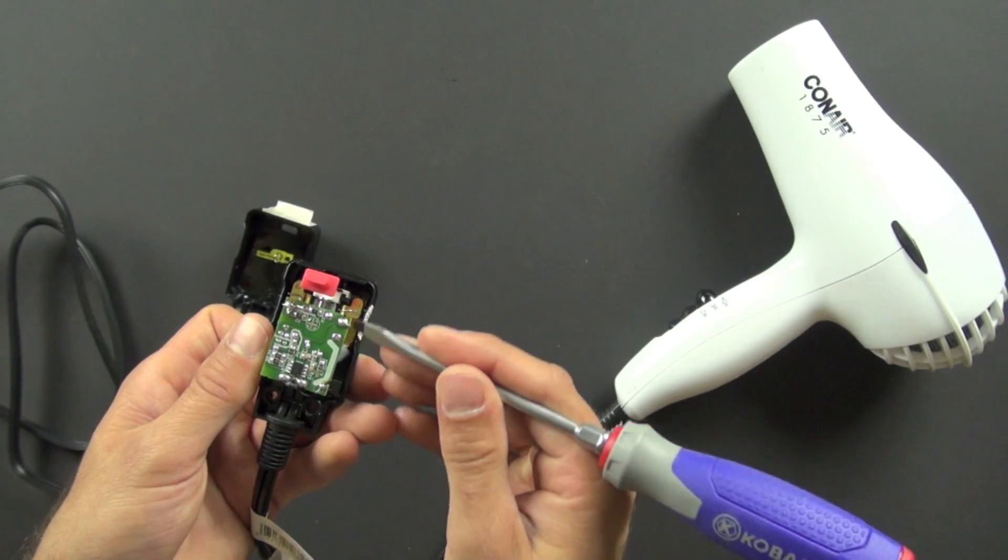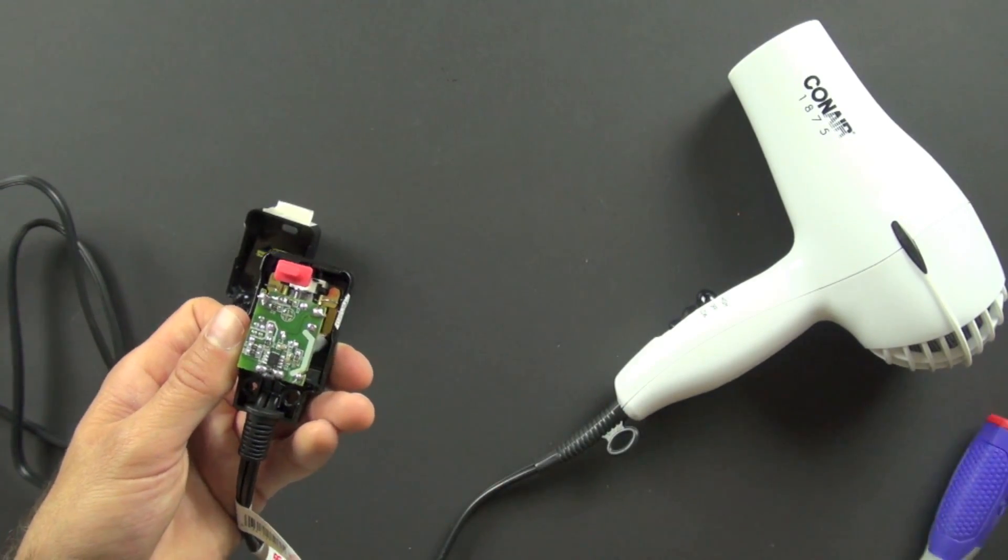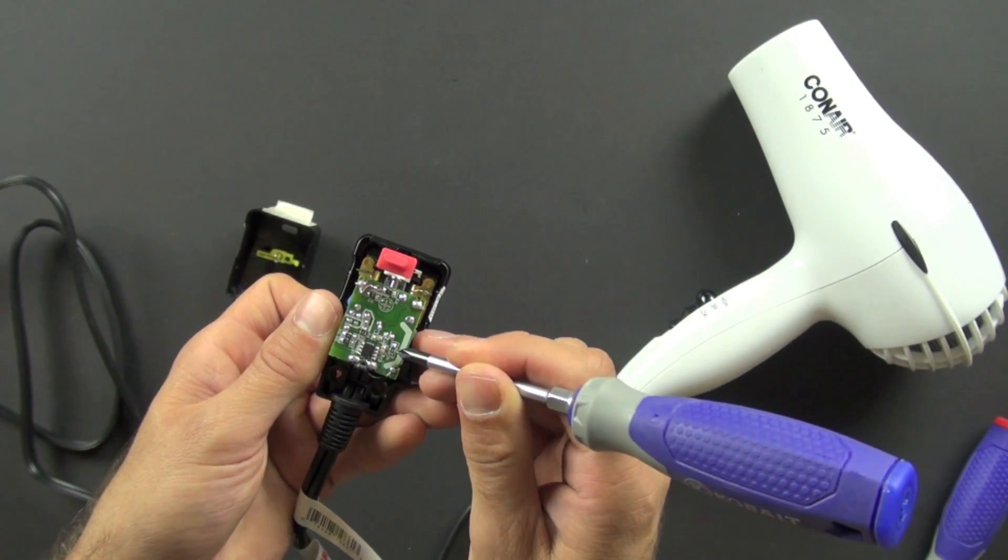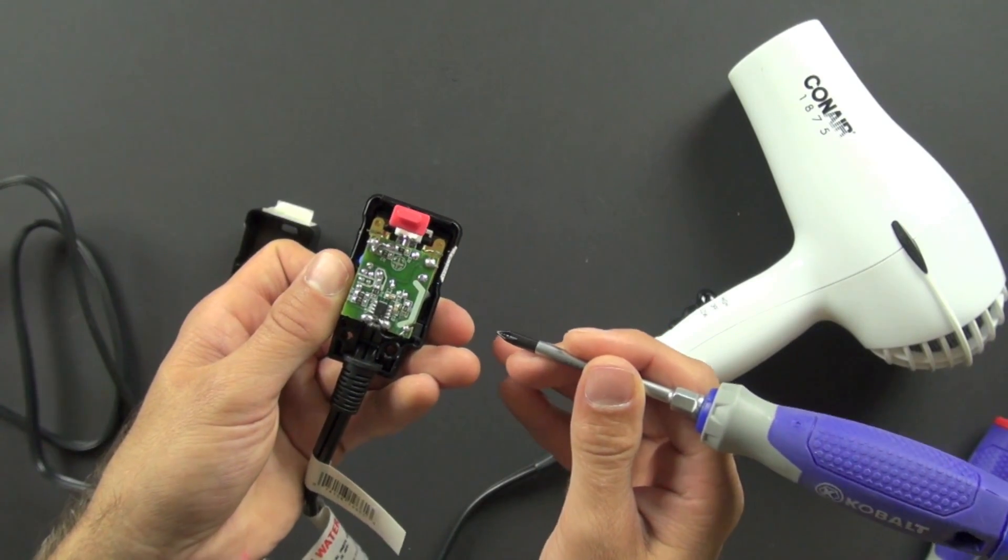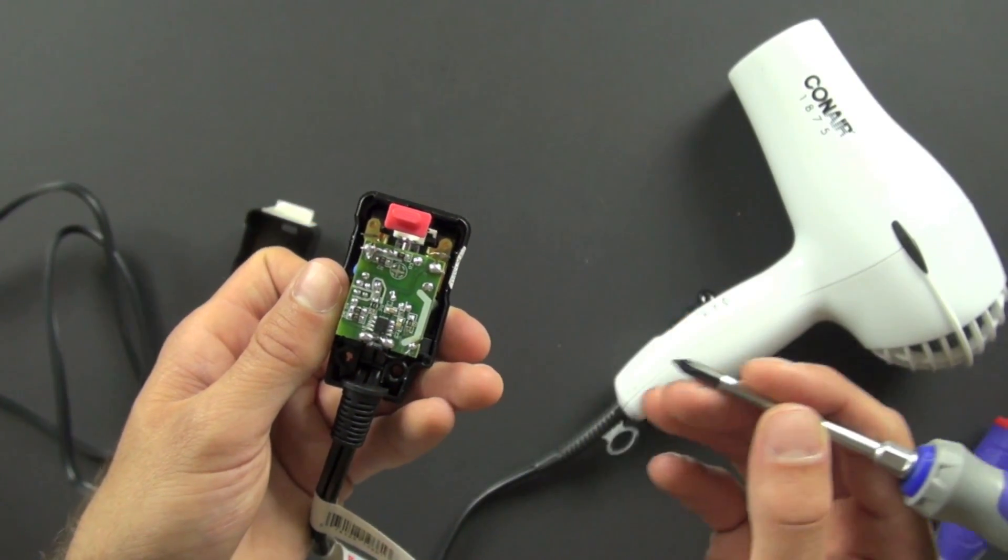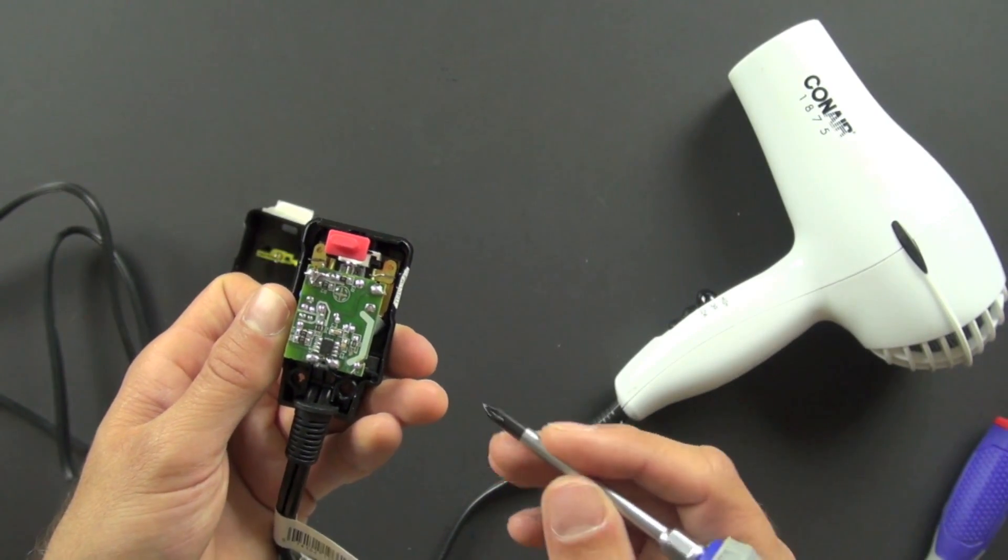And you can see on here, we've got a little tiny capacitor that's called a surface mount capacitor and a little resistor. Remember, a capacitor stores a charge and then releases it, and a resistor will resist current flow. And that can be used to protect different parts of the circuit.